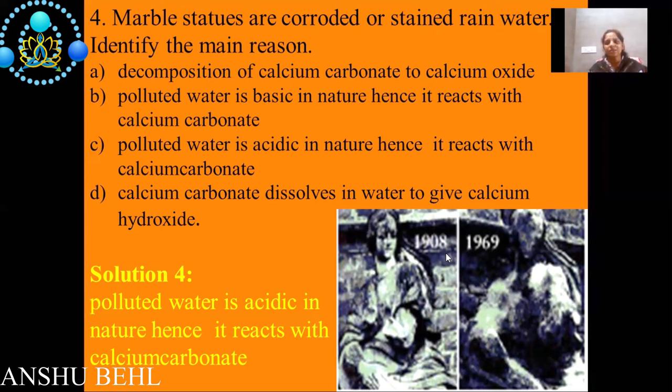When this sulfuric acid or nitric acid combines with calcium carbonate, that is limestone marble, it causes corrosion of marble. It is also called marble cancer. The substances forming sulfur dioxide and nitrogen dioxide are acidic in nature. So acidic oxides of non-metals are responsible for acid rain which will cause corrosion of marble. So out of given options we can find that option C, polluted water is acidic in nature hence it reacts with calcium carbonate, that is the right option.